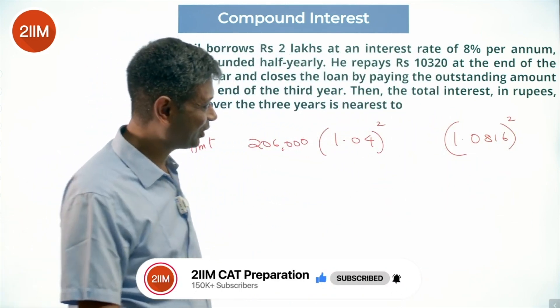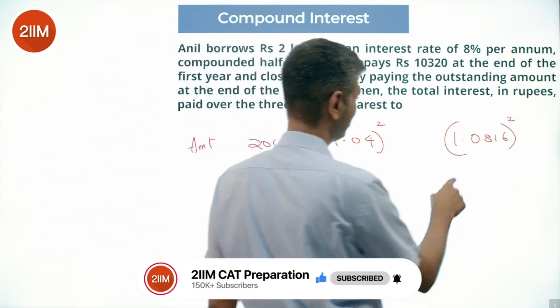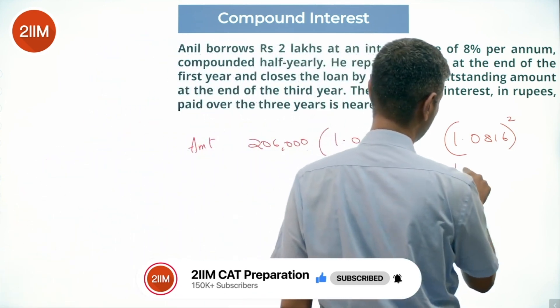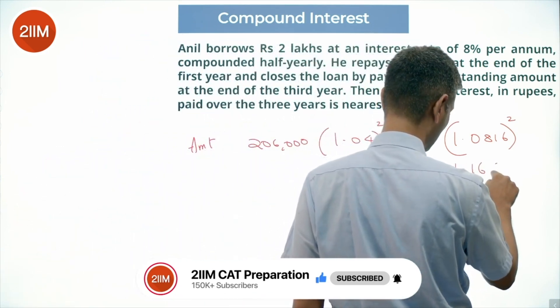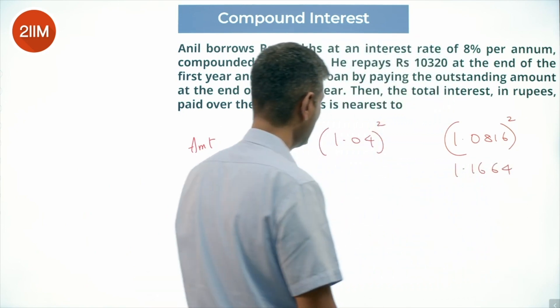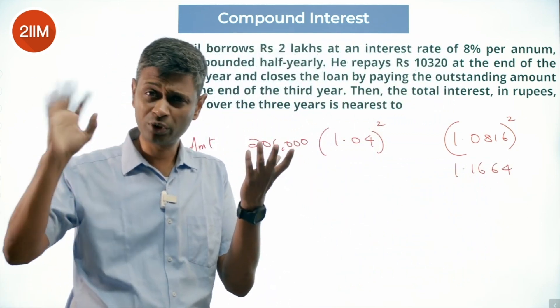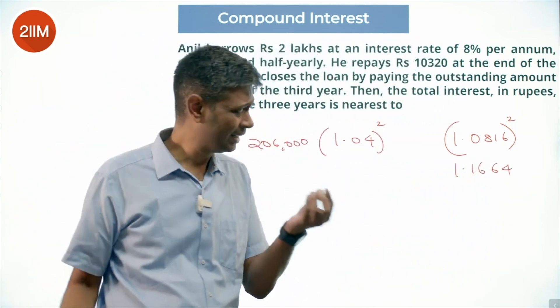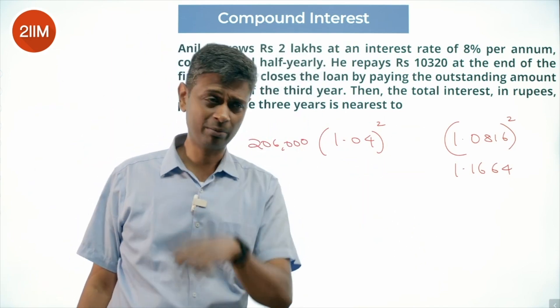I am going to think of it as 1.08 whole square, which becomes 1.1664, into 206,000. That is the total amount he pays back — a little more than that because there is the remaining 0.0016 part.